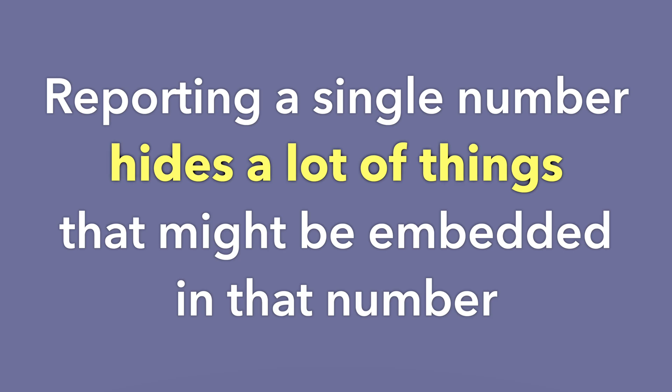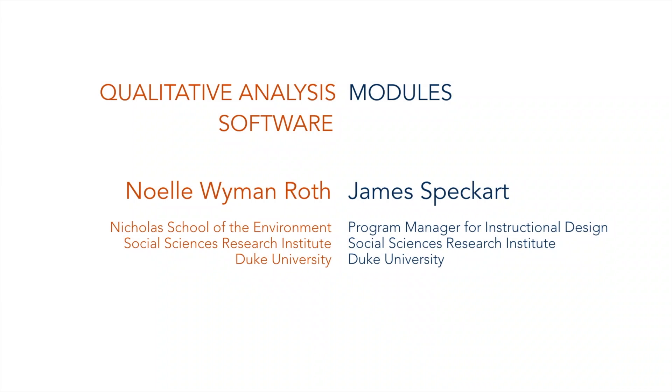I think a single number doesn't do justice to the process of coding your data, and it hides a lot of things embedded in it. For example, you might have a particular code that you disagreed on significantly, but your overall number was still high. So think critically when reading qualitative research about what those numbers actually mean.